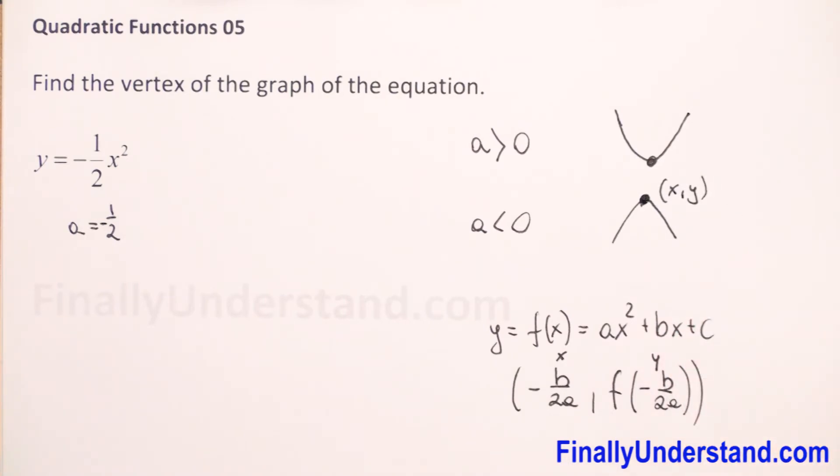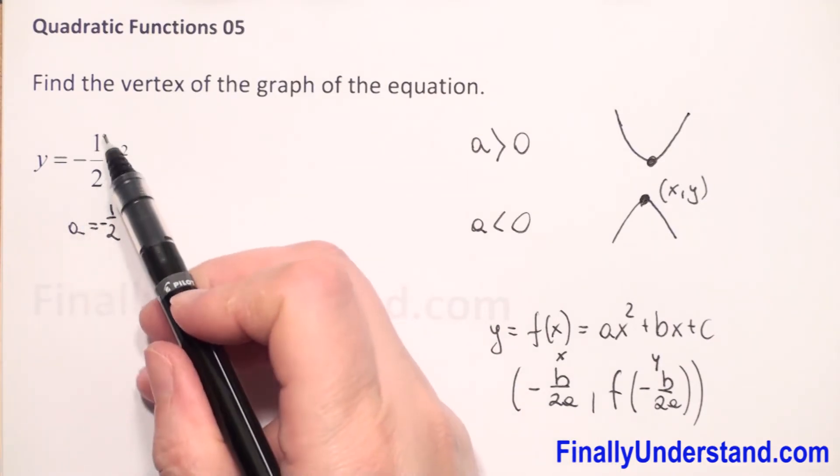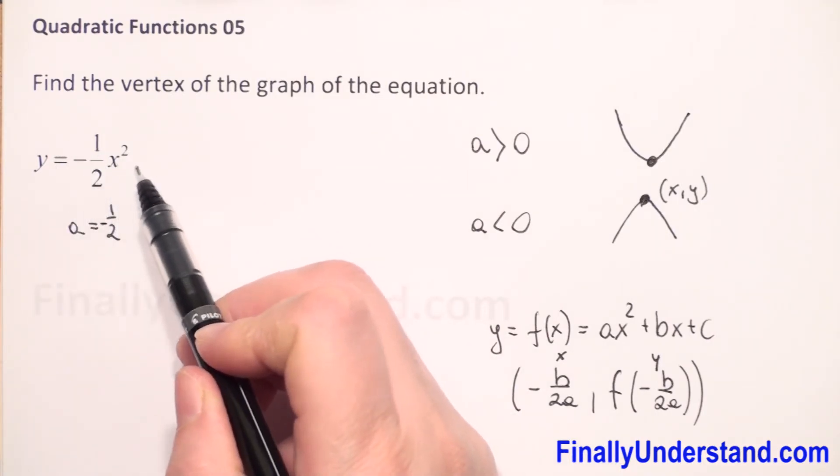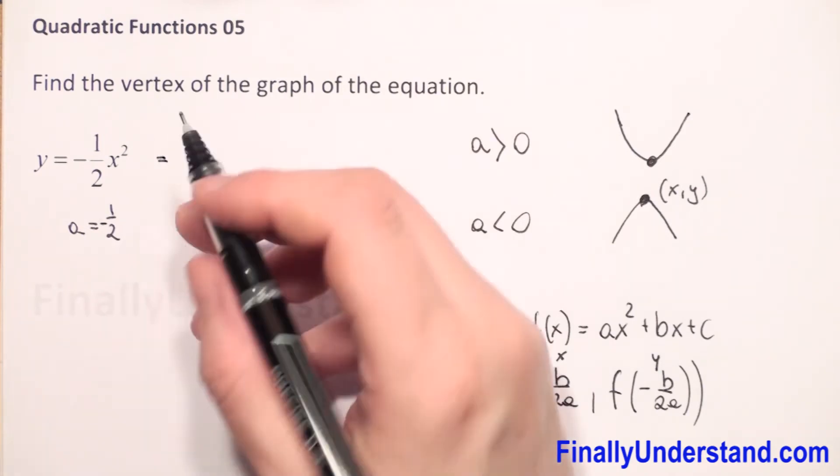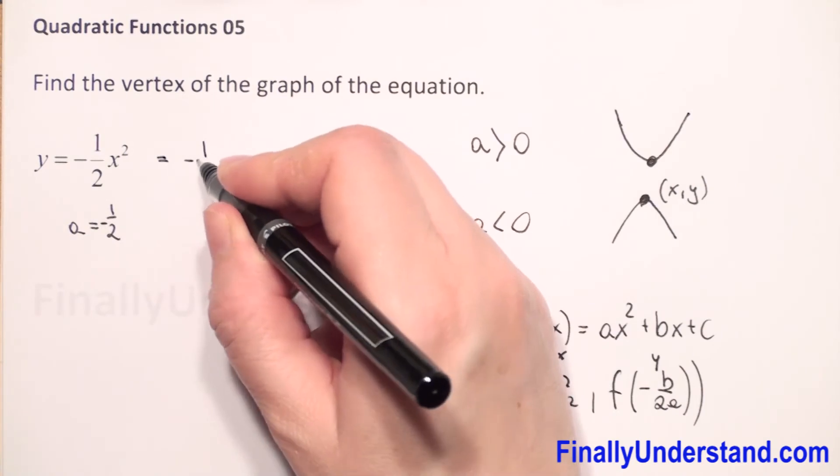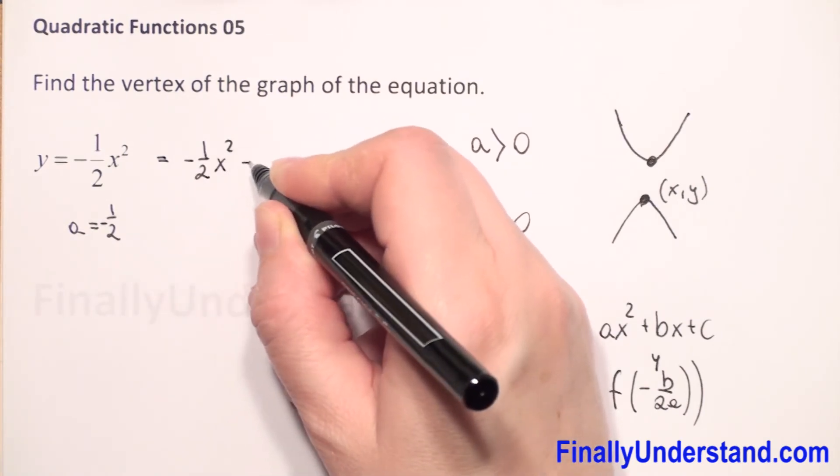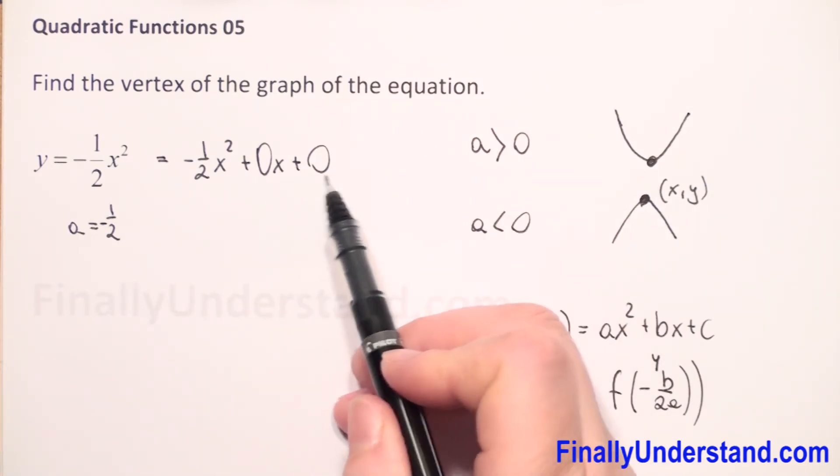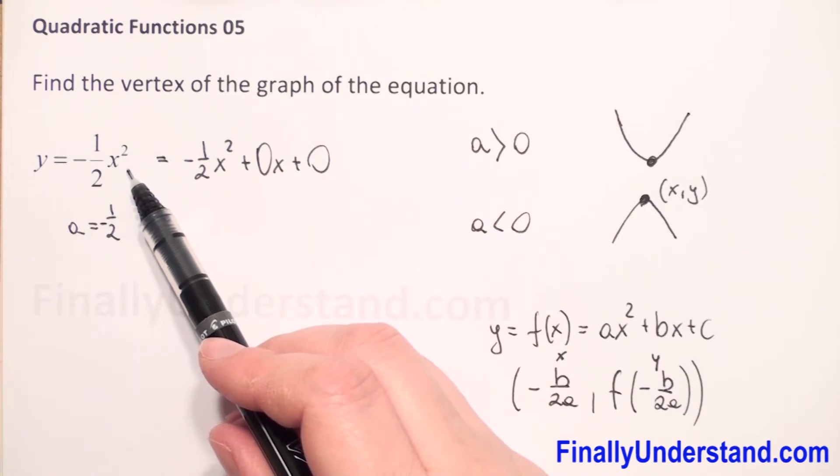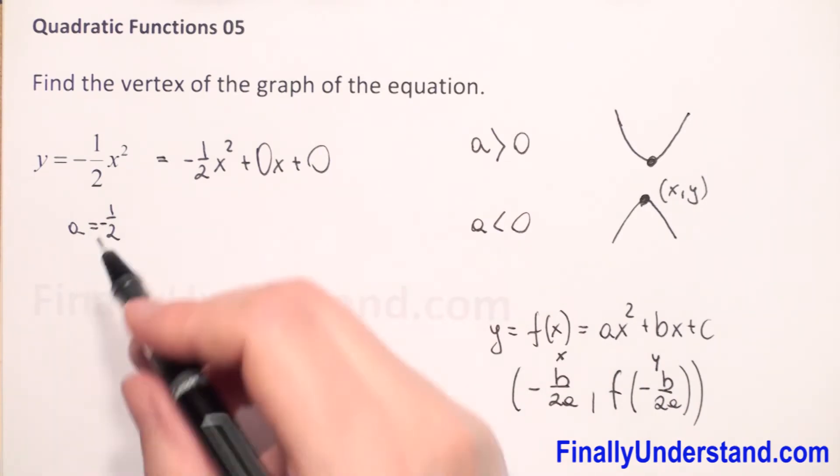We have to use this formula. We have a, we need b. Because in our equation we don't have constant and we don't have expression with x, it means that they are equal zero. So we can rewrite that our function is equal negative one over two x squared plus zero x plus zero.